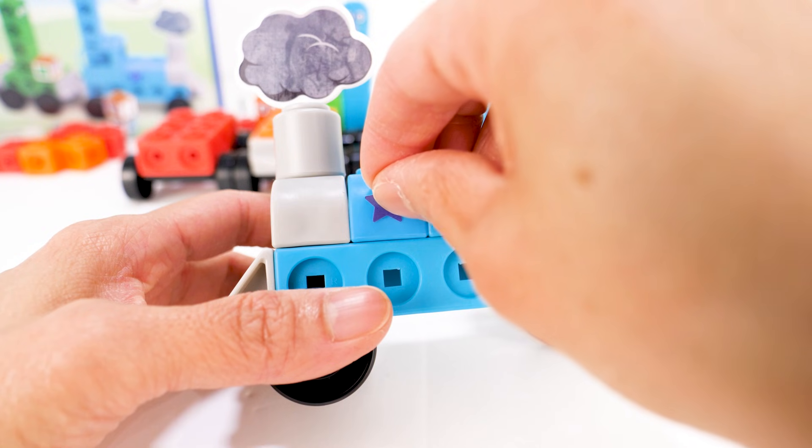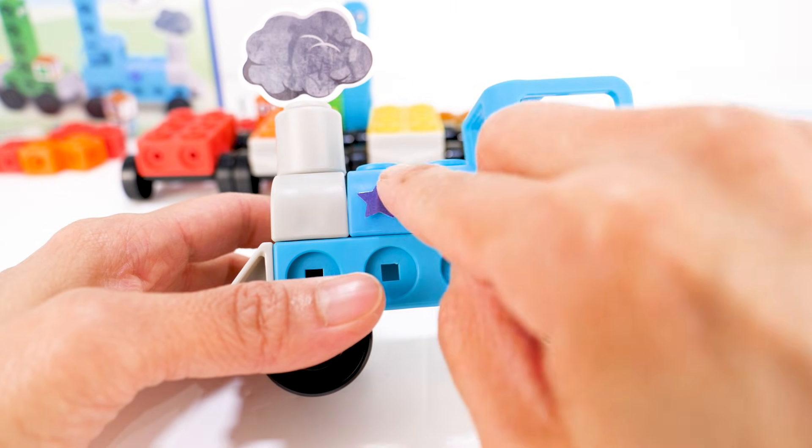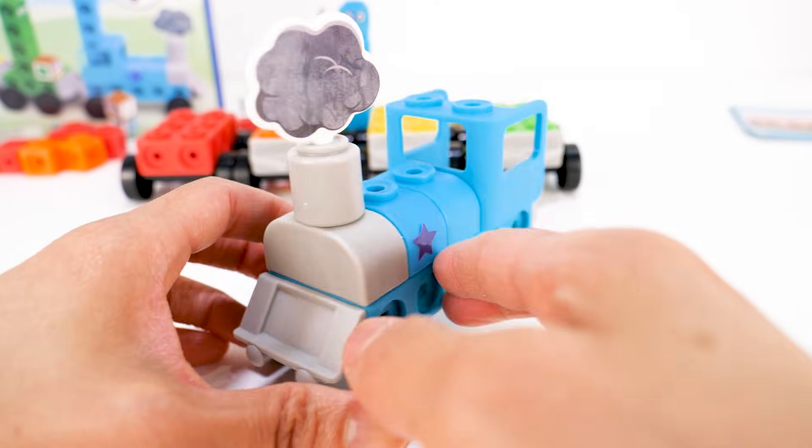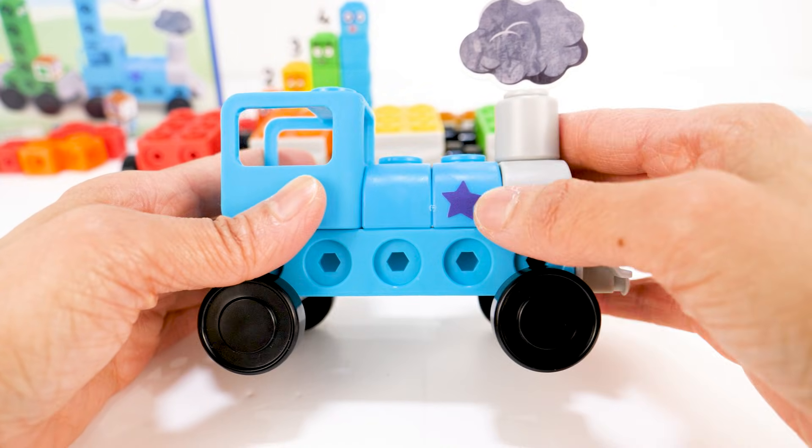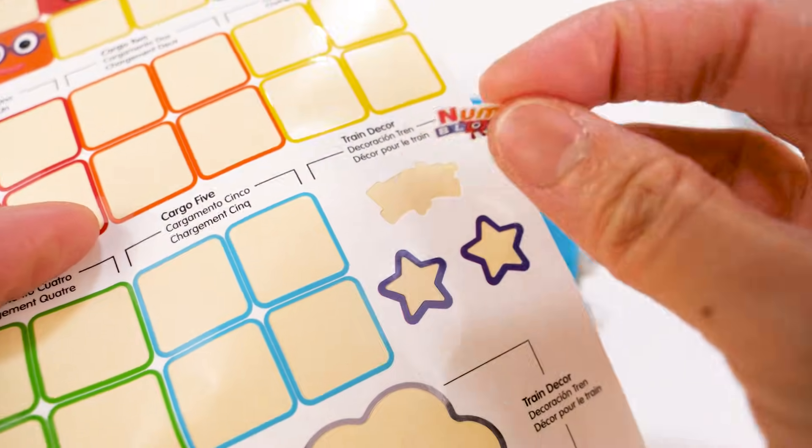Let's decorate the engine with some stickers. One star sticker on each side, then the number blocks logo at the front.